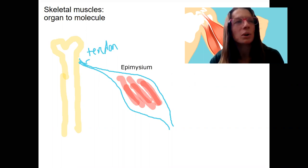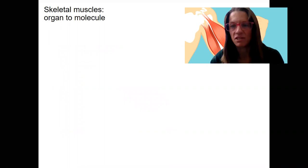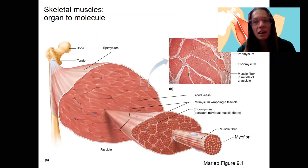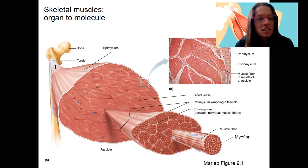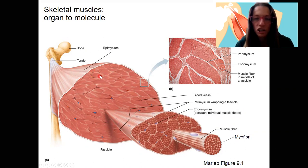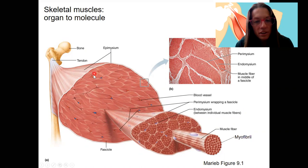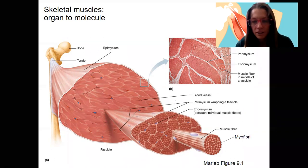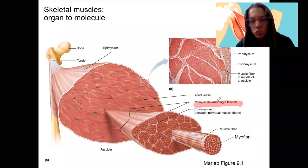I'm going to go into a better picture for the rest of it. It looks more complicated, but a lot of this is what I just showed you. Here's the bone, the tendon, and then the epimysium surrounds the entire muscle — that's the sheath right here. The entire muscle is then divided into fascicles. Fascicles are actually visible when you eat a steak — these here are individual fascicles. The fascicles are also surrounded by connective tissue: the perimysium wraps around a fascicle.